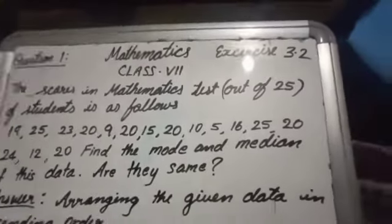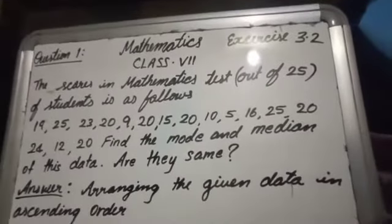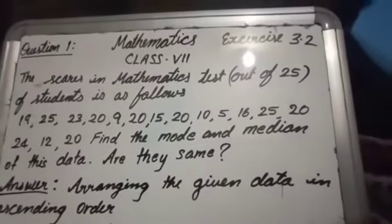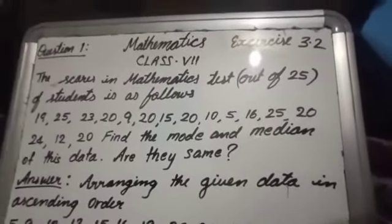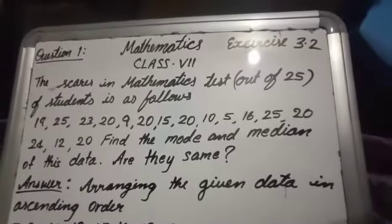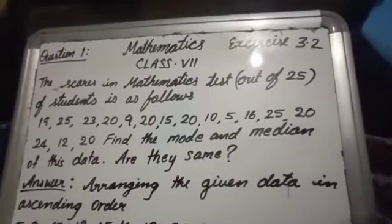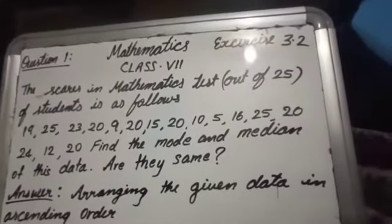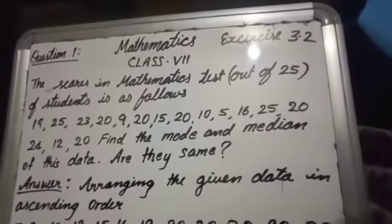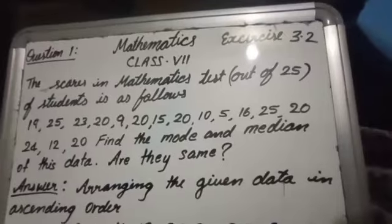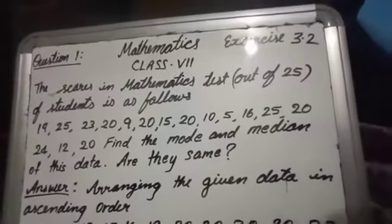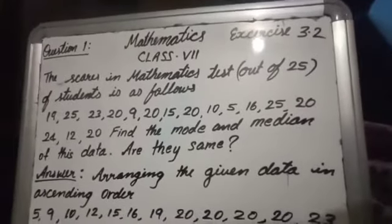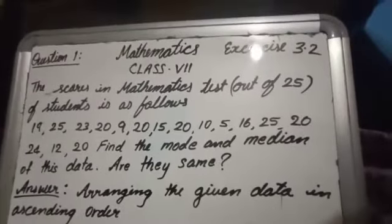Arranging the given data in ascending order. Why do we arrange in ascending or descending order? Because if you write in any order, you can easily find out mode and median. As I told you, mode is the observation that occurs the highest number of times. Therefore, what will be the mode? We can find out very soon.